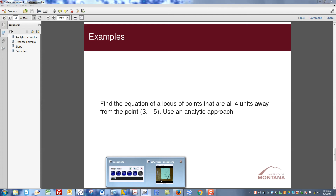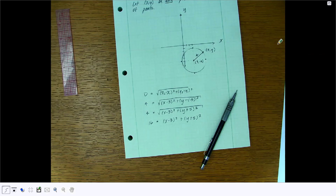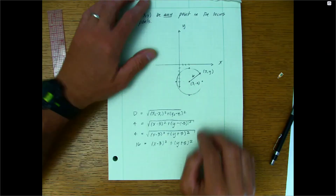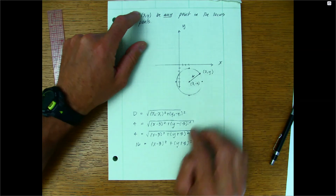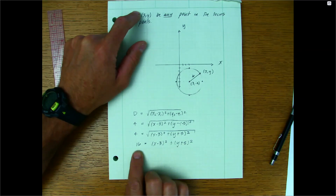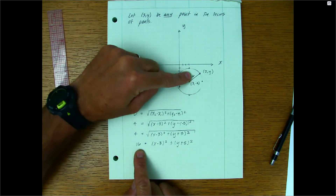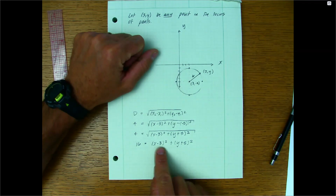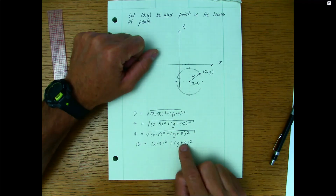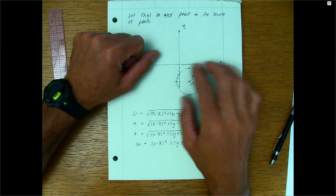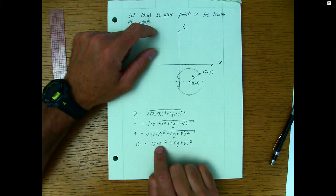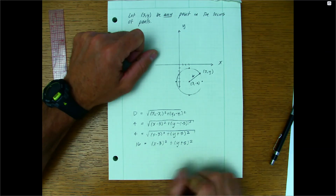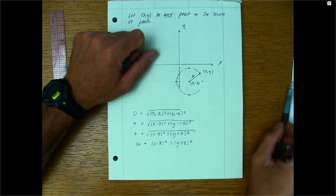It's worth noting where this usually goes in Algebra 1 or 2: we generalize the result. The 16 is r² (the radius squared), 3 is the x-coordinate of the center, and −5 is the y-coordinate of the center. The general standard form is r² = (x − h)² + (y − k)², where (h, k) is the center of the circle and r is the radius.